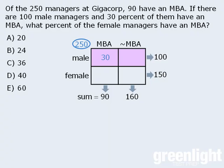Since we know that these two boxes add to 100 and one box has 30 managers, this box must have 70 managers. Next, we know that these two boxes add to 160 and one box has 70 managers, which means this box must have 90 managers.